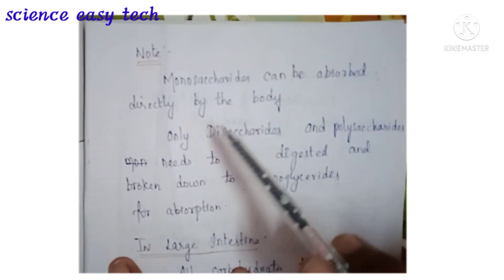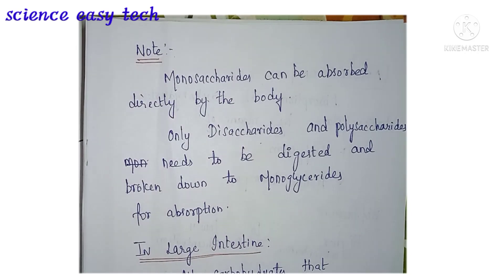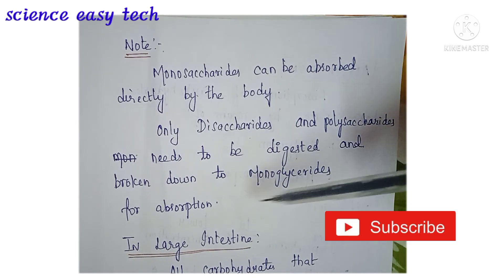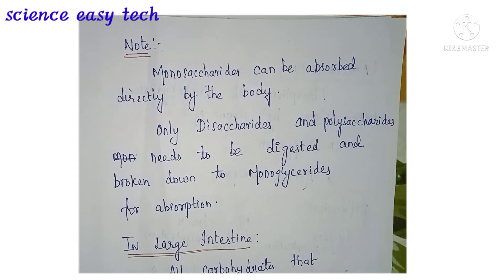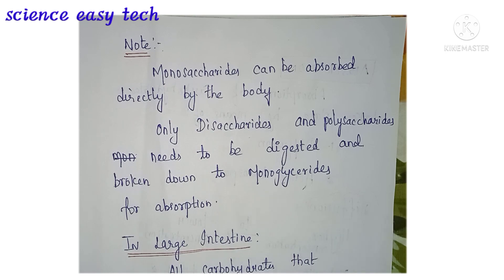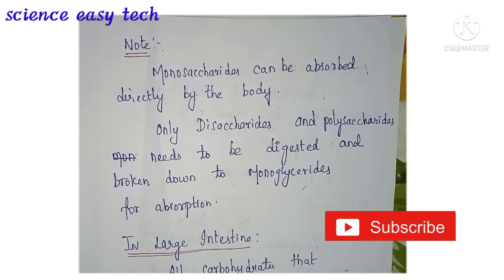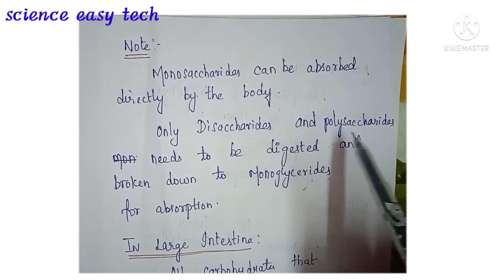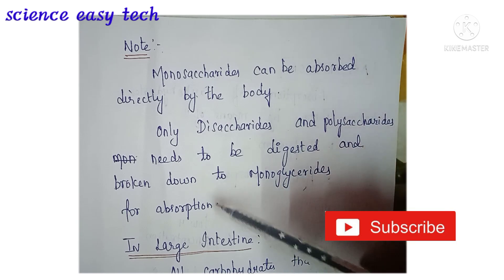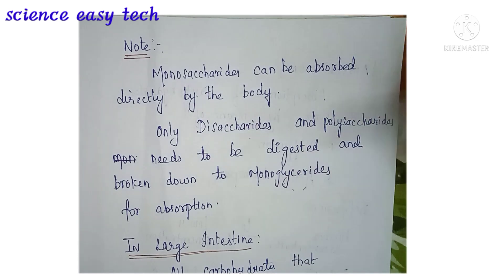Monosaccharides can be absorbed directly by the body, but disaccharides and polysaccharides need to be digested first and broken down to monosaccharides for absorption. For example, glucose can be absorbed directly — no further digestion is needed because the end product of carbohydrate digestion is glucose. If you take glucose directly, the body absorbs it easily and you get energy immediately. Disaccharides and polysaccharides must be digested before absorption.